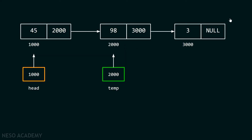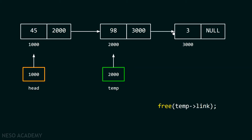Now I can simply delete this last node by using this pointer. We will just pass temp->link to the free function. The free function requires the address of the node which we want to delete. We know that temp->link contains the address 3000, which is the address of the last node of the list. We just have to pass this address to free and it will free this node.